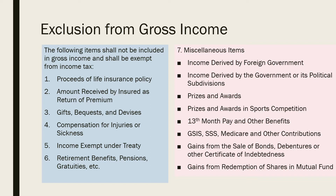Under miscellaneous income we have: income derived by foreign government; income derived by the government or its political subdivision; prizes and awards; prizes and awards in sports competition; 13-month pay and other benefits; GSIS, SSS, Medicare, and other contributions; gains from the sale of bonds, debentures, or other certificates of indebtedness; and gains from redemption of shares in a mutual fund.